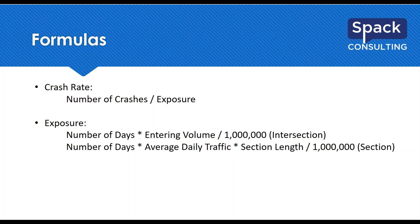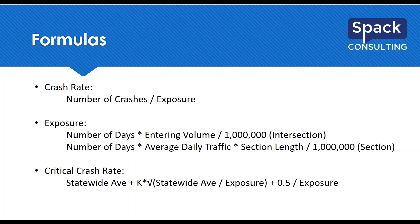Moving on to the critical crash rate formula — this gets a little tricky and requires additional information. You start with the statewide average for the type of intersection or corridor you're analyzing. The formula is: statewide average plus K times the square root of the statewide average divided by the exposure, then plus 0.5 over exposure. K is a confidence interval factor. This critical crash rate is a statistically valid threshold.